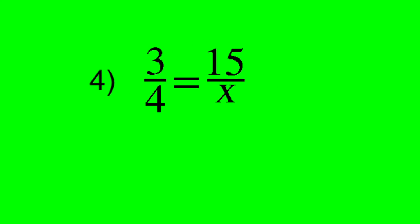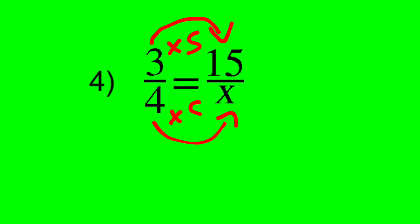And then the last question we did together today, what do I multiply by 3 to get 15? I multiply by 5. I would do the same thing to the bottom. I'll do 4 times 5. And that means that the value of x is 4 times 5, which is 20.